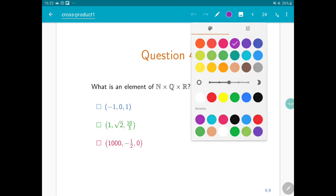Okay, so well, the first one, this is not an element because minus 1 does not belong to N. What about the second one? This is also not an element, because square root of 2 is not a rational number, so this is not in Q. And the second coordinate, we know that it has to be in Q in order to be an element of N times Q times R. While the last one is an element of that cross product, because 1000 is in N, minus 1.5 is in Q, and 0 is in R. So this is the correct solution.